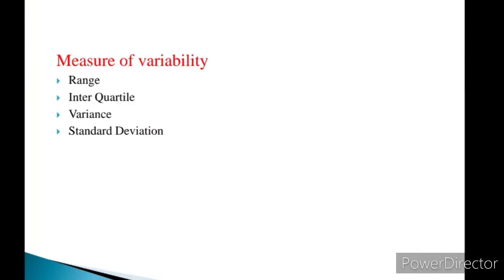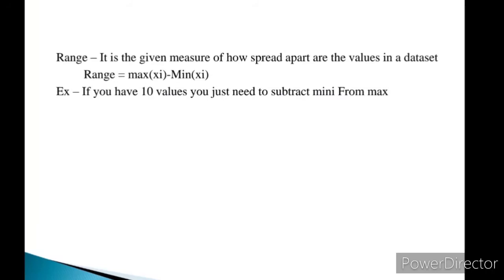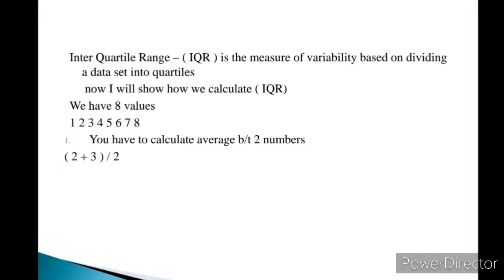Now the third part — measure of variability — which includes range, interquartile, variance, and standard deviation. First, we calculate range. If we have 10 values and need to find the range, we write the maximum value, write the minimum value, and subtract both. Range is the measure of how spread apart the values in a set are. The formula is: Range = Max − Min.